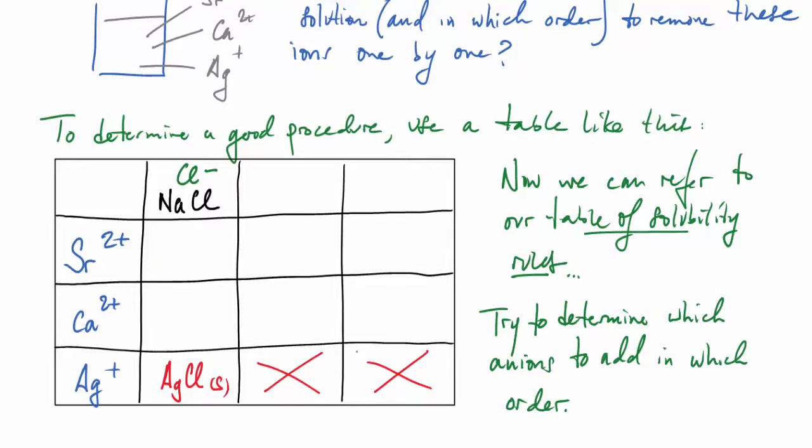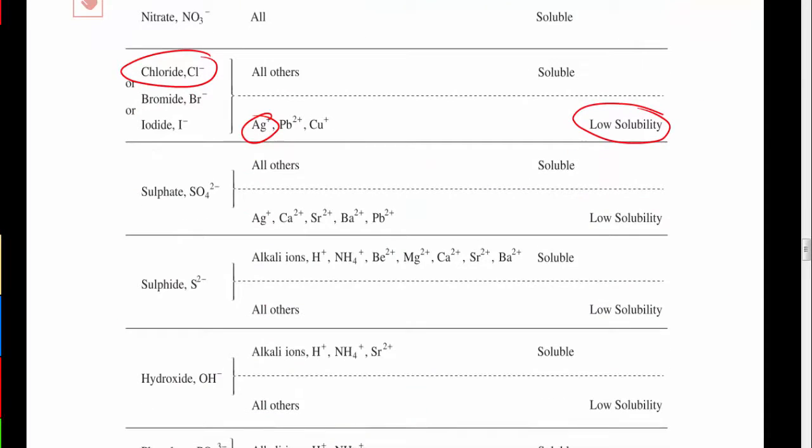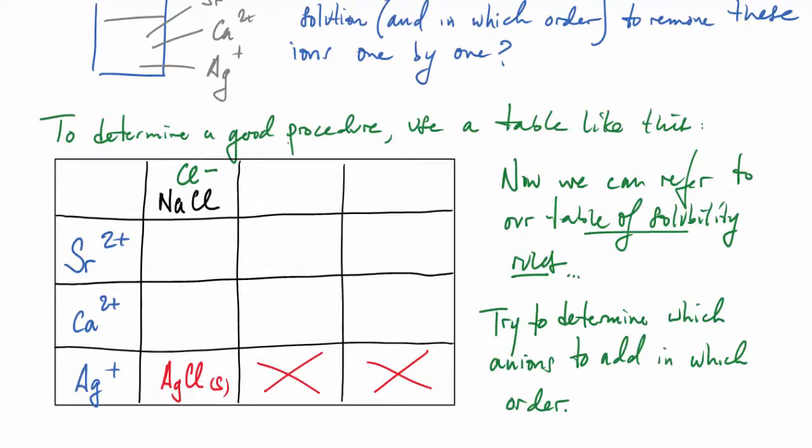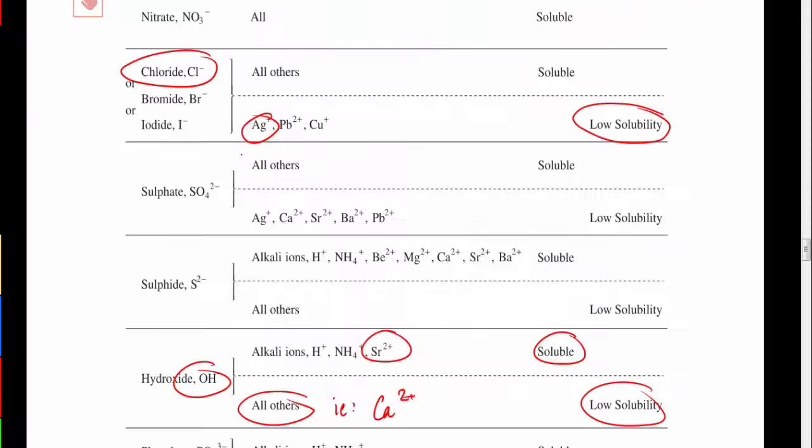Now we'll do the second step. The hydroxide ion is soluble with strontium two-plus ion, but with all others, for instance our calcium, it is insoluble. So it looks like we can use hydroxide to remove the calcium and leave the strontium alone. We'll use sodium hydroxide and remove the calcium in the form of calcium hydroxide, leaving the strontium alone.